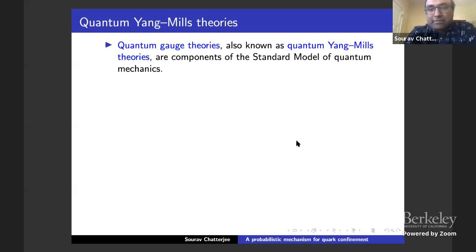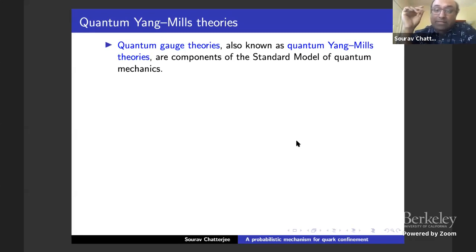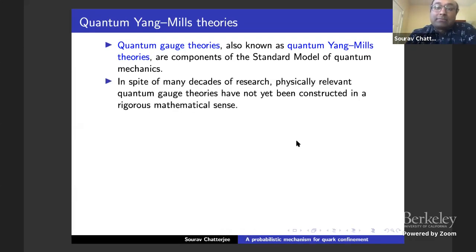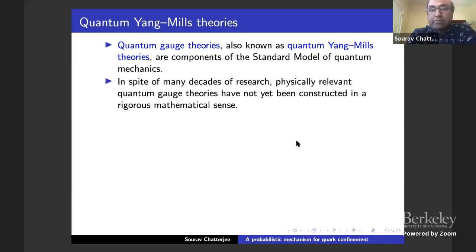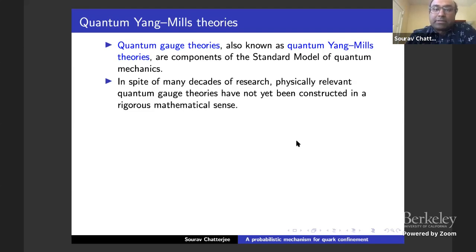A quantum gauge theory, also known as quantum Yang-Mills theory, is a component of the standard model of quantum mechanics — the best predictive model of the quantum universe as of now. Unfortunately, there has been a lot of research to construct quantum gauge theories, and physically relevant theories have not yet been constructed. The ones that actually apply to real particles have not yet been constructed; there have been some constructions in three dimensions, but the ones really important for physics have not.